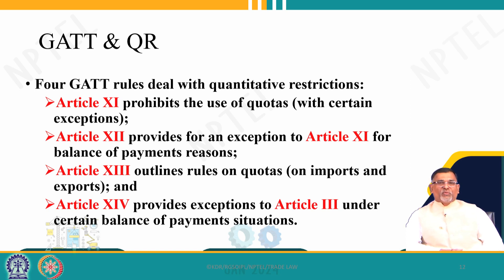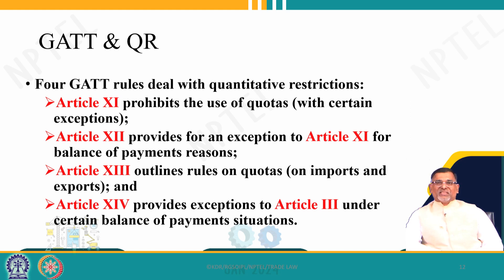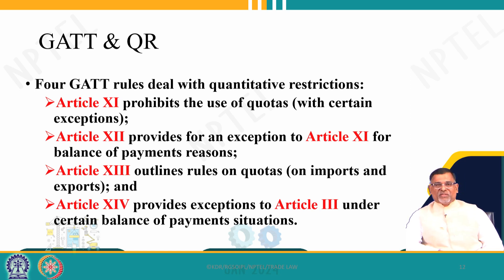Article 12 provides an exception to Article 11 in case of balance of payment problems. For example, this was the Indian QR case argument by the Government of India before the Dispute Settlement Body — that India was facing balance of payment problems, so it should get an exemption under Article 12. Unfortunately, the Panel and the Appellate Body rejected the Indian contention, saying that India was facing balance of payment problems in 1991 and the WTO came into existence in 1995, so India could not claim this privilege after 1995 by showing an old balance of payment problem.